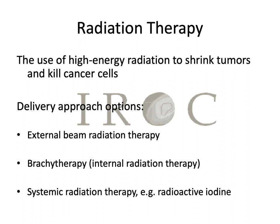In radiation oncology, we use high-energy radiation to shrink tumors and kill cancer cells. The most common form of delivery is external beam radiation therapy, which is treatment on the linear accelerators. We also commonly use brachytherapy or internal radiation therapy, which literally means radiation given at a short distance — such as prostate implants, breast brachytherapy, or tandem and ovoids, for example, for GYN cancers.